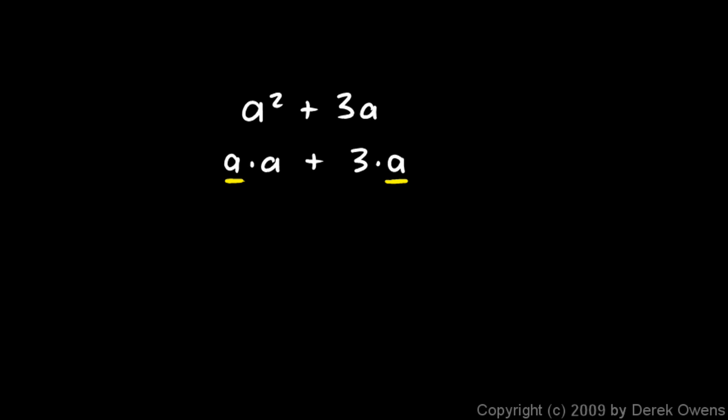So let's factor out the a. When I take an a out of the first term, that leaves me with an a. And when I take an a out of the second term, it leaves me with a 3. So a times a plus 3, that is the factored form of this expression. And again, we have two factors. If those two are multiplied together, it gives me the original expression. So these two factors are the factors of this.